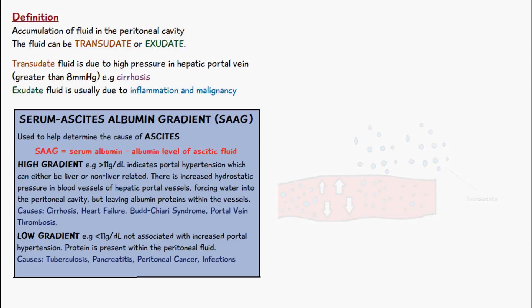A low gradient result is less than 11 grams per deciliter and is not associated with increased portal hypertension, because there is a lot of protein present within the peritoneal fluid. The causes of low SAAG ascites can be tuberculosis, pancreatitis, peritoneal cancer, and infections.